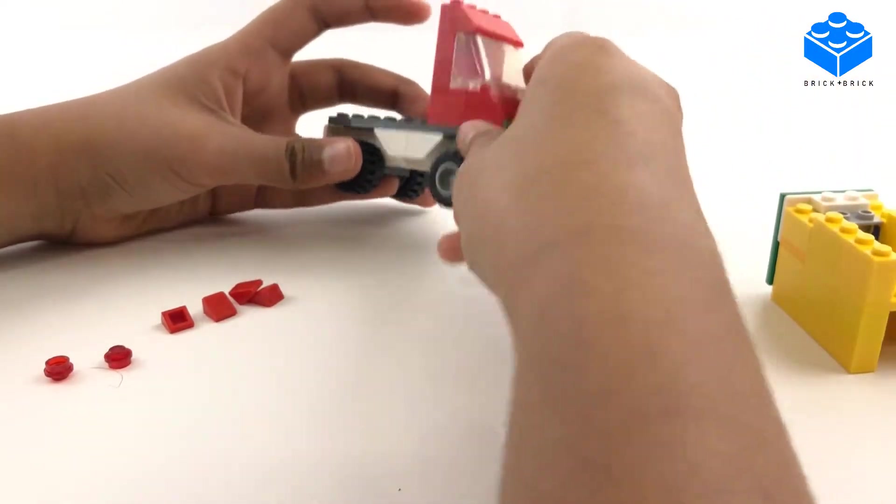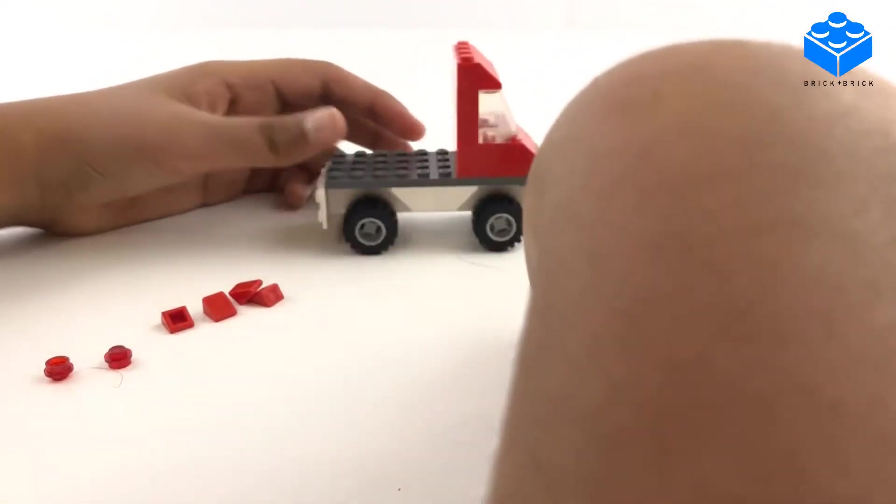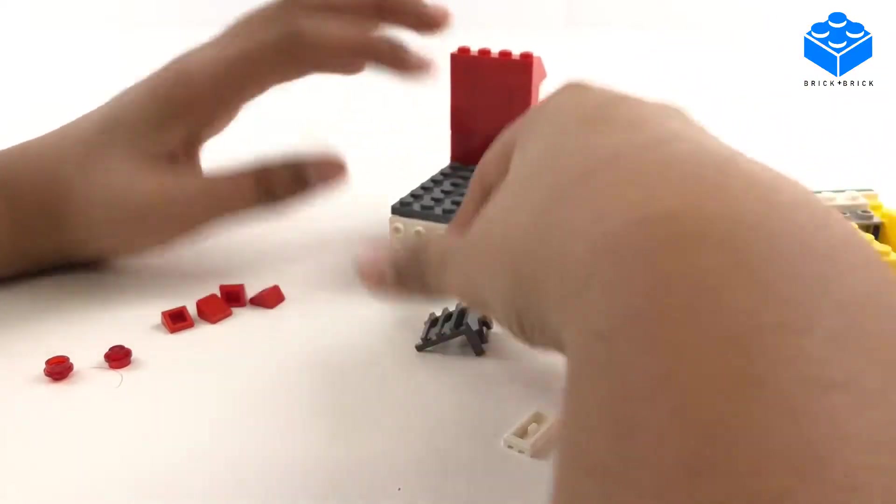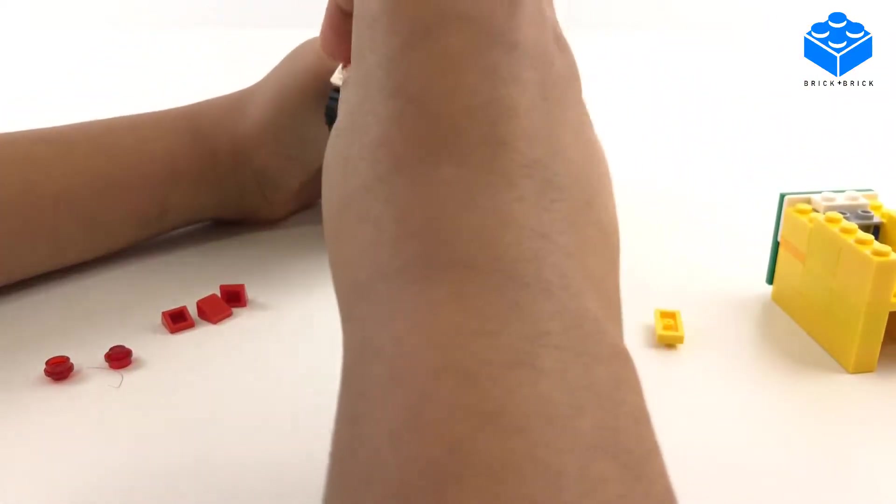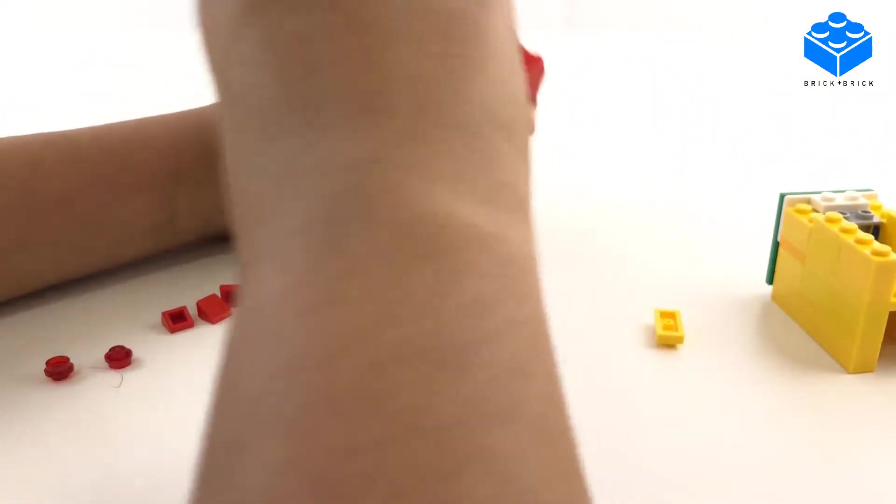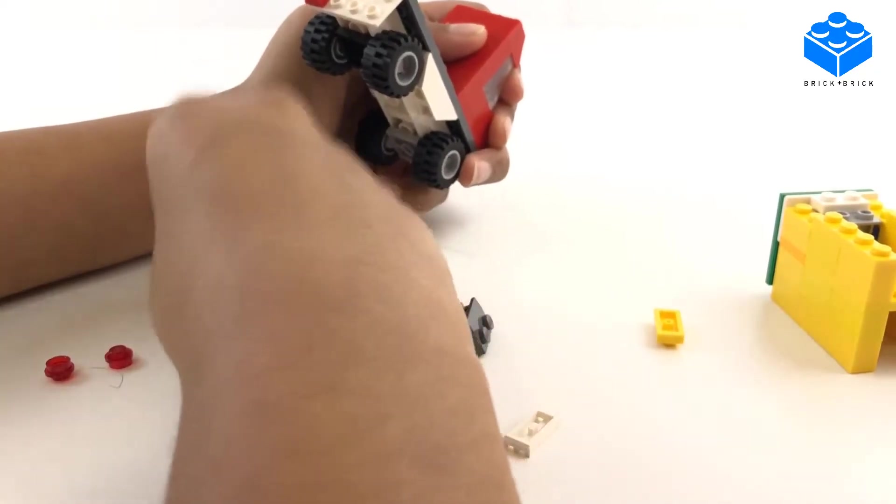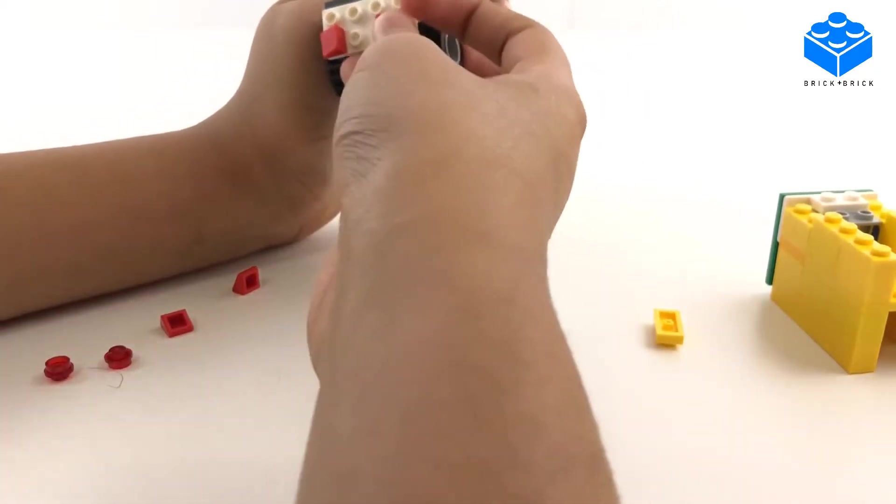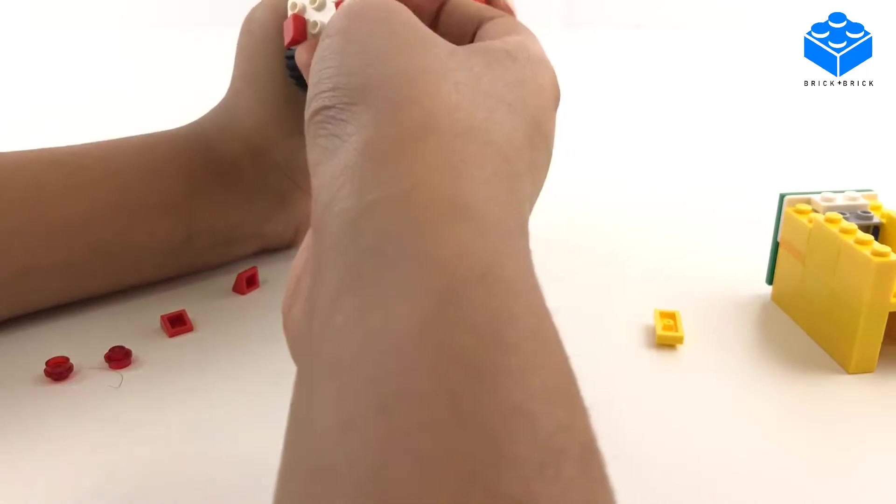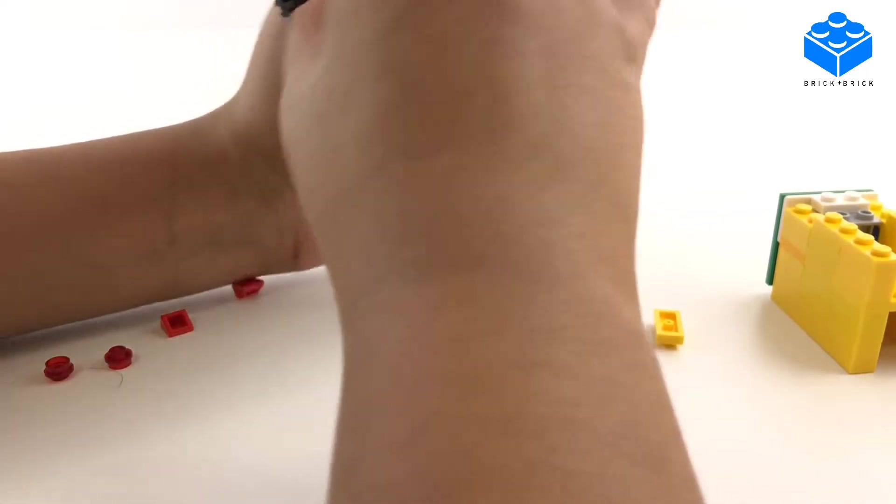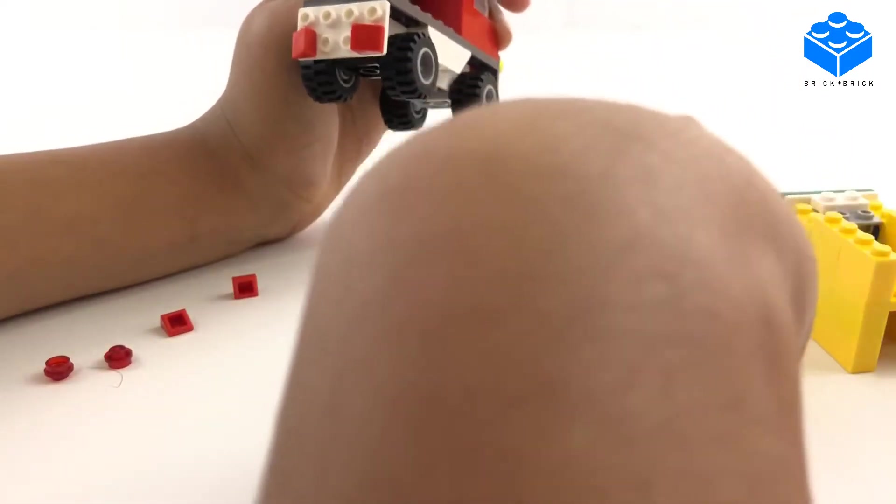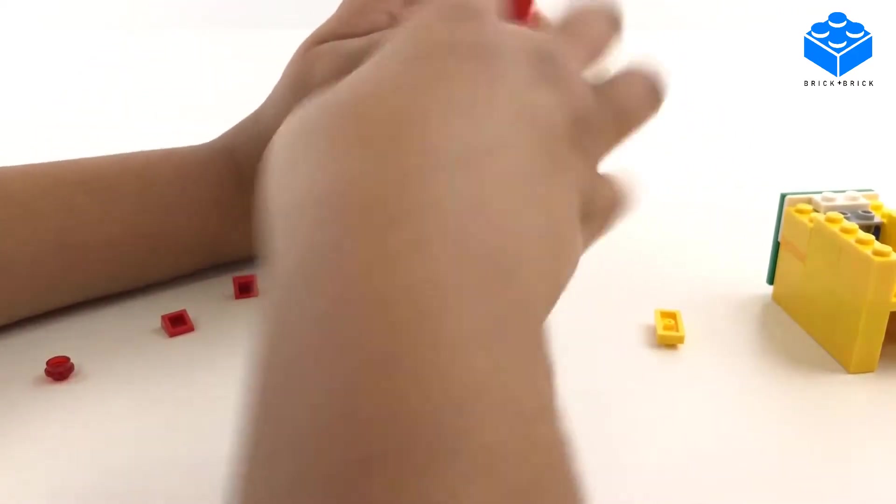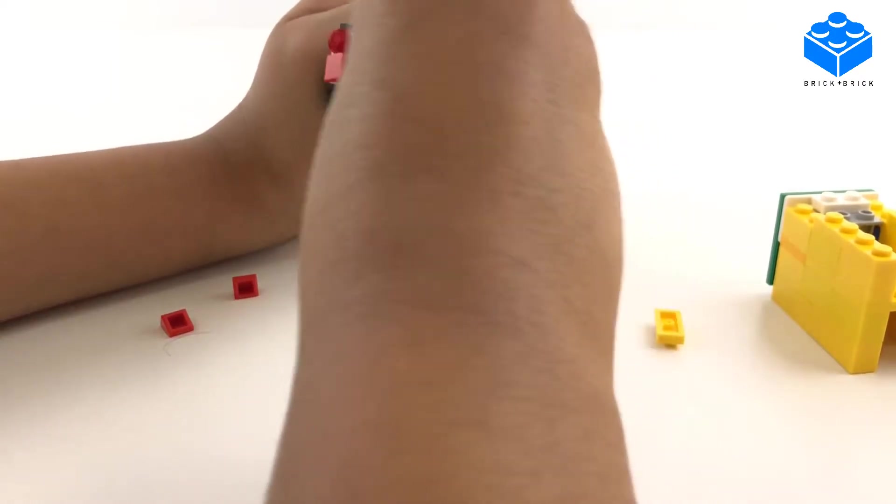So we have a little separator, and then for the back we can put these triangular pieces and we'll use this grill to put at the back and put some lights in between.